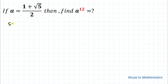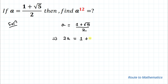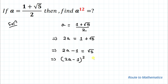So without any delay let's start the solution. We have given a equals to 1 plus root 5 by 2. Let's simplify the value of a first. By cross multiplication we have 2a equals to 1 plus root 5. Now I'll take this 1 to the left hand side, so we have 2a minus 1 equals to root 5. In order to remove this root, we'll square both sides of the equation.